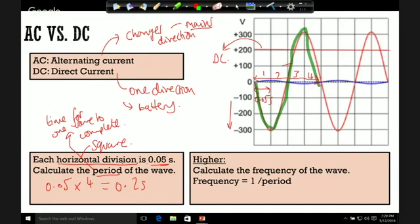So all period is is the time for one wave to complete. Just to stress for foundation, all you need to do is count how many squares there is for one complete wave and then times that by the number they give you for each horizontal division.